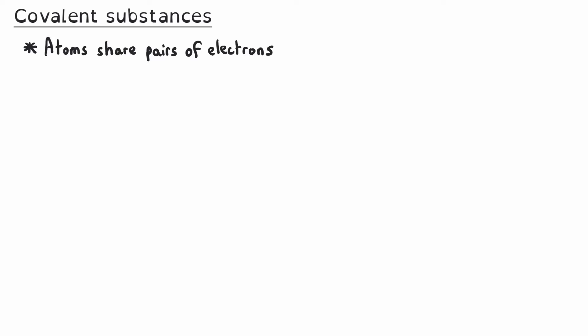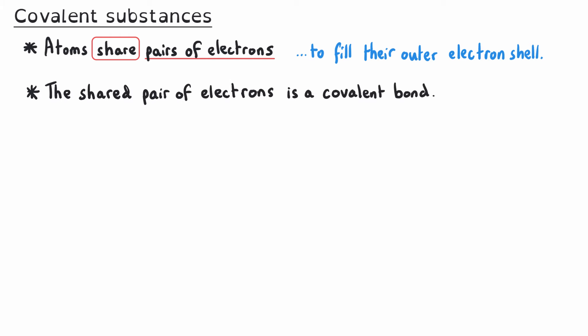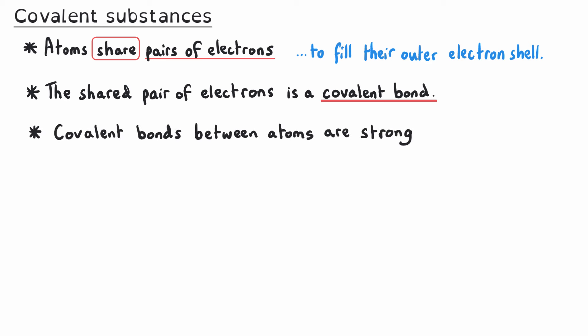Covalent substances are formed when atoms share pairs of electrons to fill their outer electron shell and become stable. The shared pair of electrons is a covalent bond, and it's that shared pair of electrons that holds the atoms together. The covalent bonds between atoms are very strong, which means they are very difficult to break and require a lot of energy to separate the atoms.